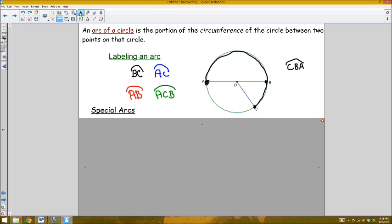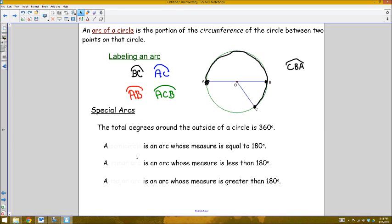Now that we know how to label them, there are actually a few special kinds of arcs that we can talk about. In order to talk about these special arcs, we should just be reminded that the total number of degrees around the outside of a circle, all the way around the outside, is 360. We've talked about that before.